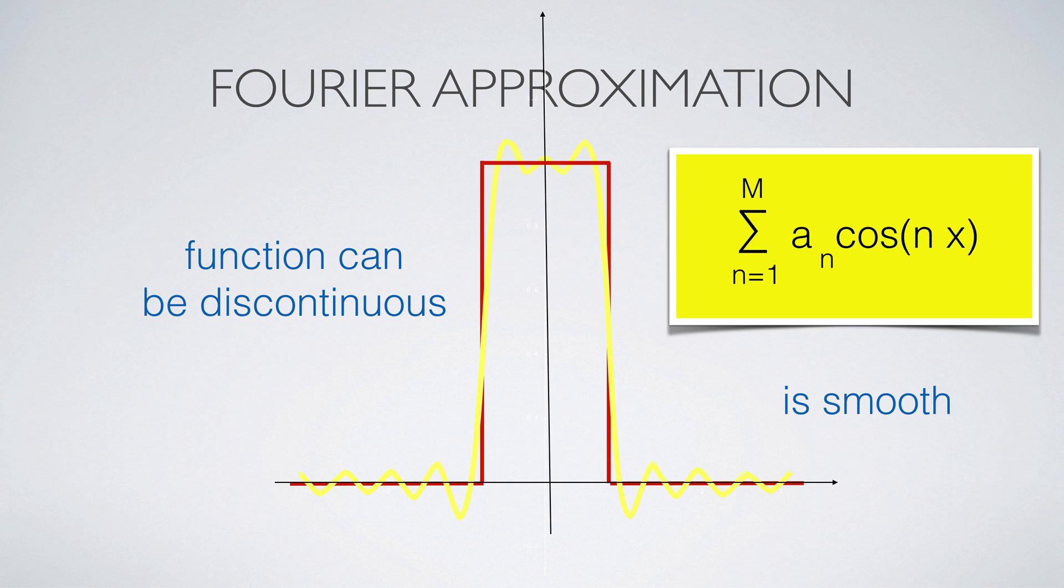The approximation works also in the case of functions which have discontinuities. If we truncate the Fourier series in sum a finite number of terms, we get a smooth approximation.